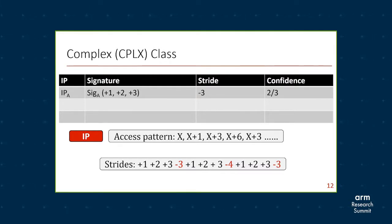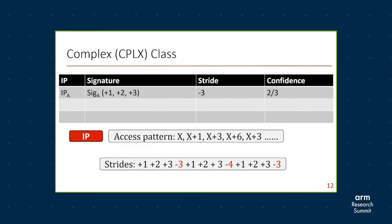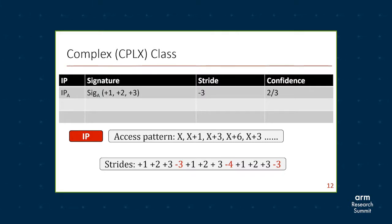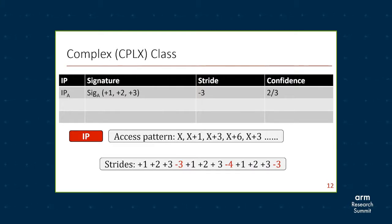In this case we propose the complex class, where we classify an IP into a complex class and store the strides as a signature, then probabilistically determine what the next stride will be given a sequence of strides that we call a signature. In this example, IP-A has a signature of plus one, plus two, plus three, and two out of three times the output says it should be minus three — meaning whenever IP-A sees strides of plus one, plus two, plus three, it should prefetch with a stride of minus three.